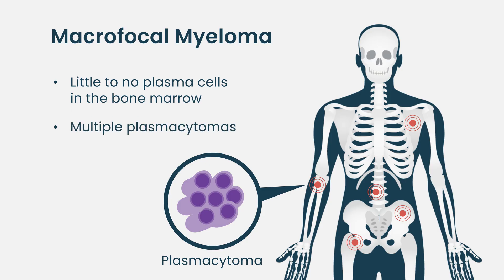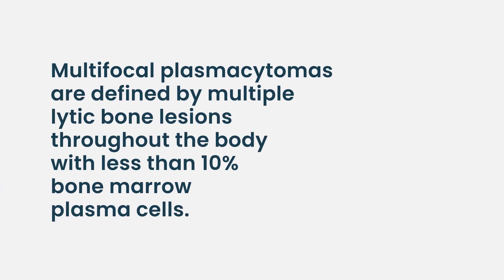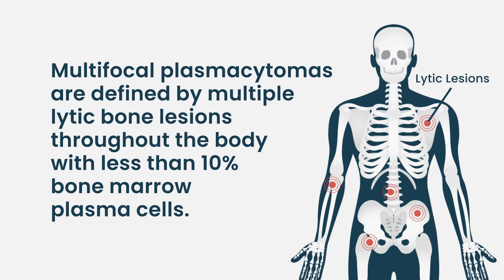These tumors are usually more than one, and that's why it's called multifocal. If it's only one, it's called solitary plasmacytoma, and that's a completely different entity. The multifocal plasmacytoma consists of scattered lesions or tumors throughout the skeleton made of plasma cells. They usually don't secrete a lot of protein, and they are actually quite difficult to diagnose.